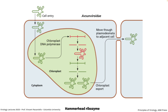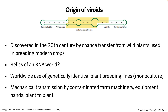Transmission happens via mechanical transmission by farm machinery — tractors running over plants or equipment hands moving plant to plant. Farmers can do it when they touch and break the plants. Insect vectors can also make damage. Viroids don't need any receptors; they just go through the cell wall. These were discovered in the 20th century when people established breeding lines from wild plants that had viroids. We think viroids are relics of the RNA world — perhaps the best piece of evidence for that world: no coding, just RNA and a ribozyme that can cleave it.